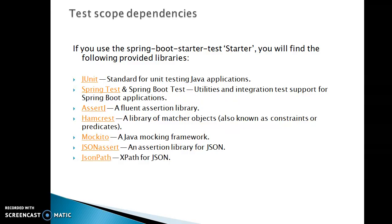Next, AssertJ is a fluent assertion library. When you write JUnit test cases you need to check certain conditions using assertions, and AssertJ provides a rich assertion API. Hamcrest is a library for matcher objects — it supports defining different kinds of predicates and provides a lot of regular-expression-style API.